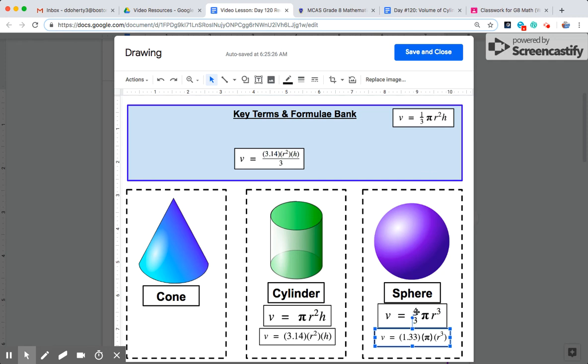4 thirds would be a non-terminating decimal, it would just keep going as 1.333 forever, but you could write 1.33 as an estimate.